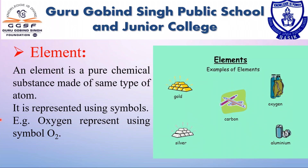An element is defined as a pure chemical substance made up of the same type of atom, and it is represented using a symbol — for example, oxygen is represented using the symbol O₂. An element contains only one type of atom, and each atom has the same atomic number, meaning the same number of protons in the nucleus. Examples of elements include hydrogen, oxygen, sodium, gold, carbon, aluminum, silver, etc.